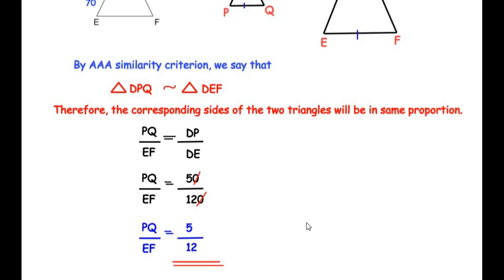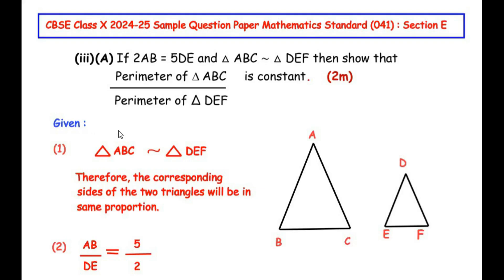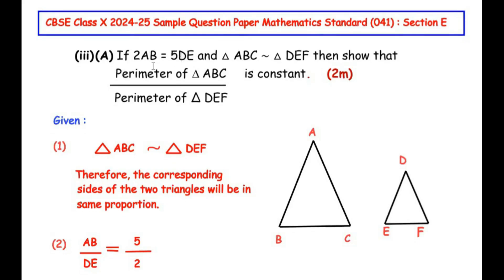For the third sub-question: if 2 times AB equals 5 times DE and triangle ABC is similar to triangle DEF, show that the perimeter of triangle ABC over the perimeter of triangle DEF is a constant. We are given that triangle ABC is similar to triangle DEF, and 2 times AB equals 5 times DE. Rearranging with DE on the left gives AB over DE equals 5 over 2.